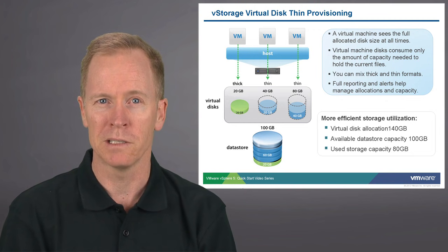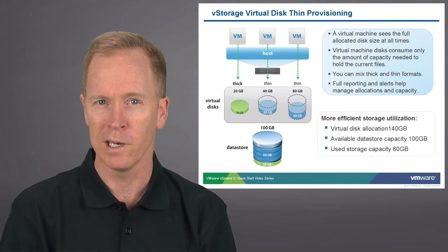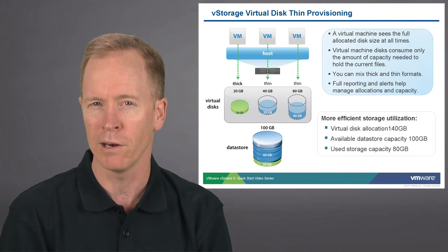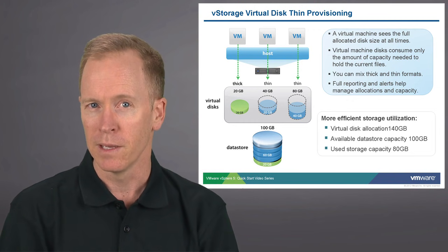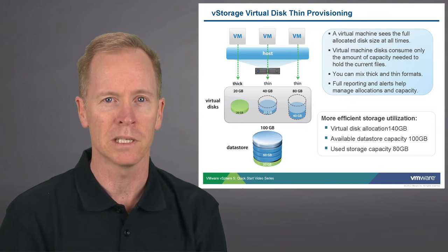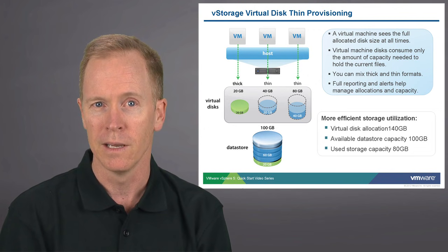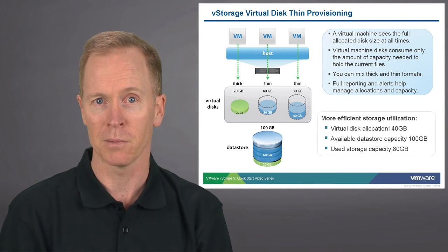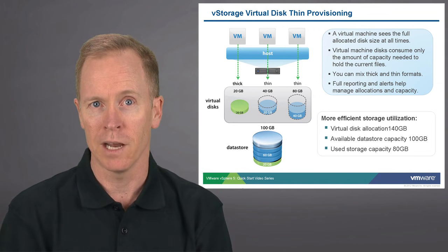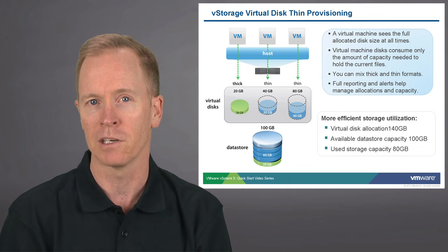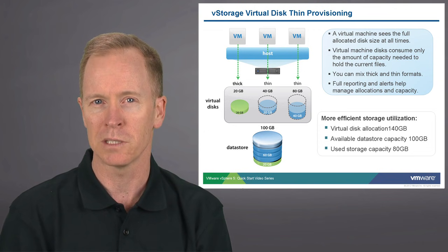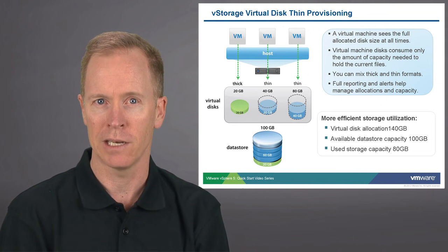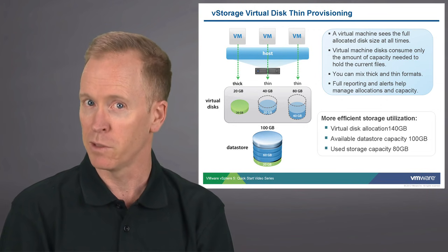Continuing with this example, we have a 20-gigabyte thick disk, a 40-gigabyte thin disk, and an 80-gigabyte thin disk, for a total of 140 gigabytes. Now, though it may seem impossible, we can actually store all three of those virtual disks in the data store illustrated at the bottom of the slide. That data store only has a 100-gigabyte LUN with a 100-gigabyte VMFS. You would think that 140 gigabytes of virtual disks wouldn't fit in that 100-gigabyte LUN, but with thin-provisioned virtual disks, we can. The first disk has 20 gigabytes allocated to it. The second disk, though it appears to be 40 gigabytes, only has 20 gigabytes.